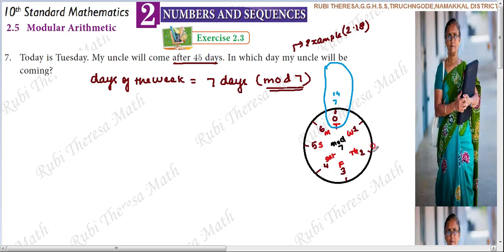Instead of counting day by day, we use Mod 7. The multiples of 7 are: 7, 14, 21, 28, 35, 42, 49 and so on. We find the largest multiple of 7 that is less than or equal to 45.